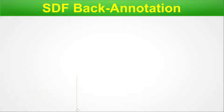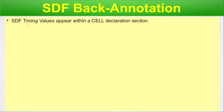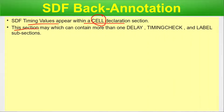SDF timing values appear within a cell declaration inside the SDF file. Please go ahead and watch the SDF episode — the link is in the video description. A cell section may contain more than one delay, timing check, and label section. The delay section contains propagation delay values for specify paths and interconnect delays.